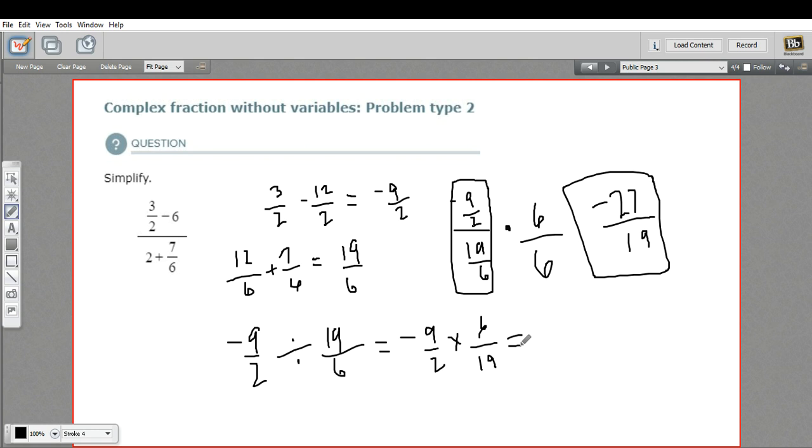And so you would multiply across the top and across the bottom. And, well, you would get, I would probably cancel. I'd call this 3 and cancel that. And we get 9 times 3 is 27 and negative 27 on the top and 19 on the bottom.